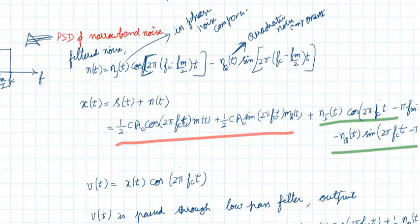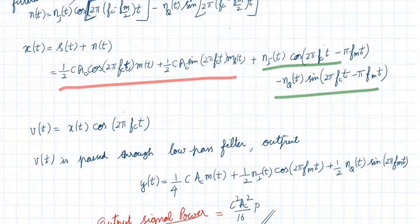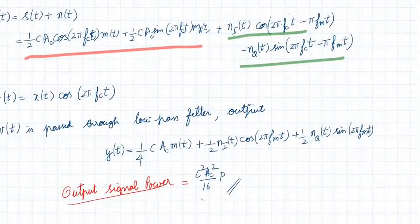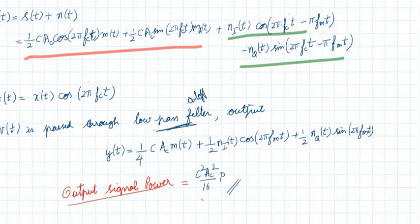Multiplying x(t) by cos(2π fc t) and expanding using cos²  and the identities cos(a−b), sin(a−b), then passing through a low pass filter with cutoff frequency fm, we get the output y(t). The output y(t) has two components: a message signal component and a noise component.